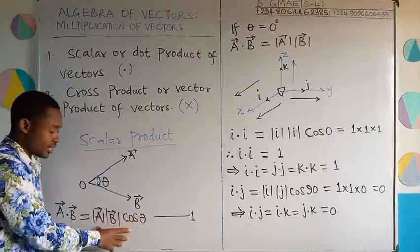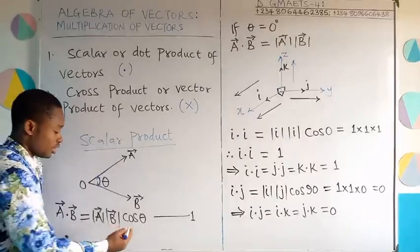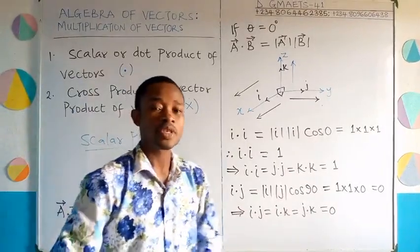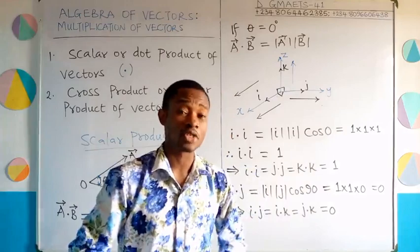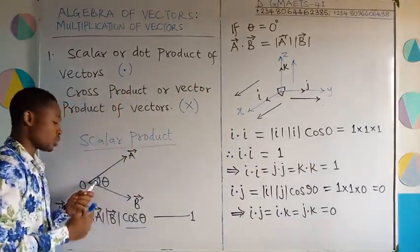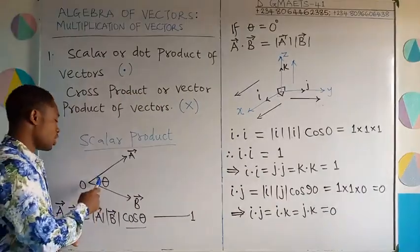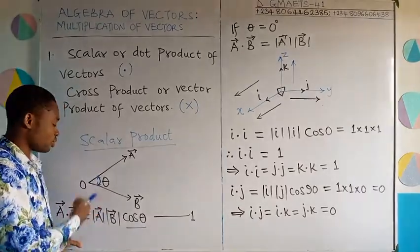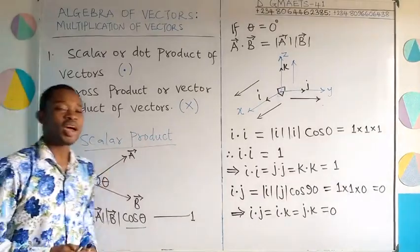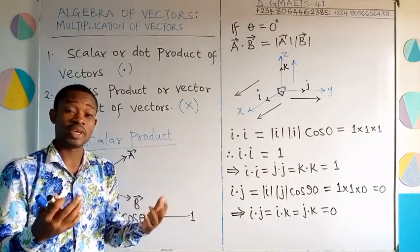I'd like to talk about this scalar product formula, especially the cos theta term, because it's a very important part. It helps us know certain properties of the dot product. For example, when the angle between the vectors is zero, what is the dot product? When the angle is 90 degrees, what is the value? And even when the angle is 180 degrees — the case of anti-parallel vectors.